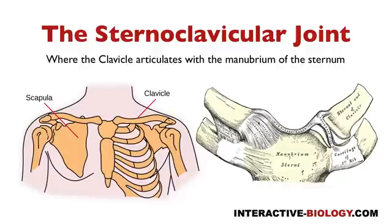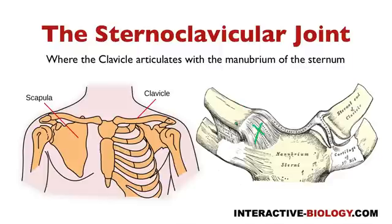The first two that I want to point out — you can only see one of them here — but right here you see we have the anterior sternoclavicular ligament. Now if we have an anterior, that most likely means we also have a posterior sternoclavicular ligament. You can't see that here, but that's going to be on the posterior aspect. We have those two ligaments connecting between the manubrium of the sternum and the sternal end of the clavicle.